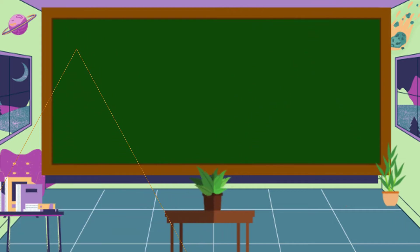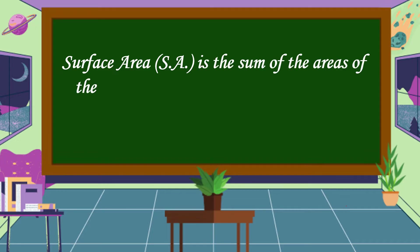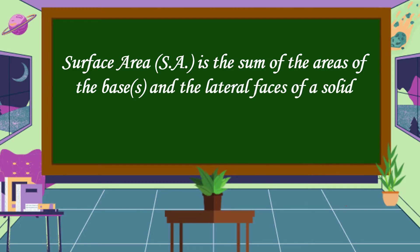What is a surface area? Surface area, or SA, is the sum of the areas of the base or bases and the lateral faces of a solid figure.